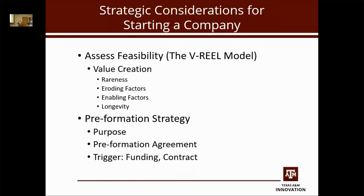One piece of advice we give entrepreneurs: do not start your company until you absolutely need to, because the players in your team and ecosystem are going to change. I've seen groups of three or four students who are equal partners form a company, and six months later two are gone — one got a job at Google making $200,000 a year, another got married and moved away. If you wait until you need to form, you can create a simple pre-formation agreement — a one- to two-page document stating who is doing what and what equity they earn. If somebody leaves, you don't have to worry about reassigning equity or incurring legal expenses.